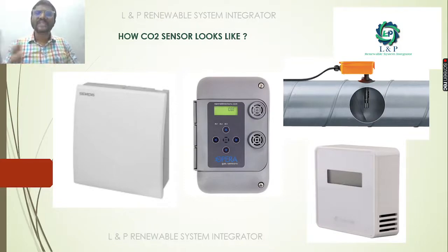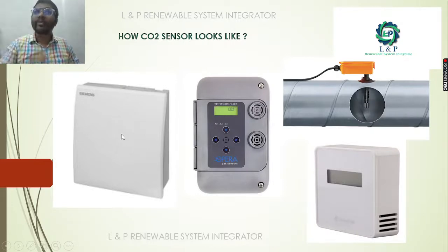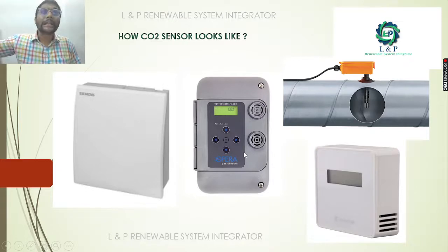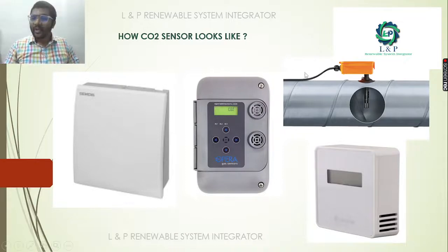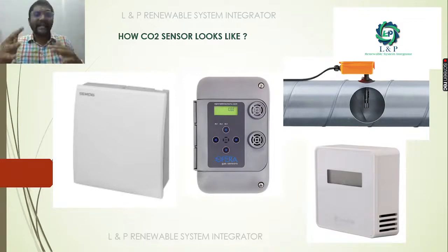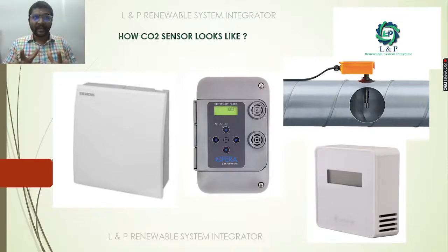How does it look like? It is available in different formats. This is an example of a wall-mount type, which will be installed inside the room to monitor indoor air quality. This is an example of a sensor which can get installed in the outdoor external environment with cover protections. There are certain CO2 sensors which get installed inside the ducts. There are many companies producing CO2 sensors for different applications. Today we will discuss the wiring diagram of the Siemens CO2 sensor in detail, because the concept for everything is going to be the same.